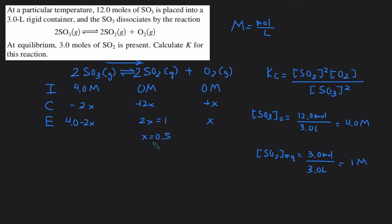So then once we have our x, we can just plug the x back into the rest of the E line. This would be 4.0 minus 2 times 0.5, which is just 4.0 minus 1, so it'll give us 3 molar. This right here was 1 molar because it's 2x, so 2 times 0.5, and then this right here would be 0.5 molar.